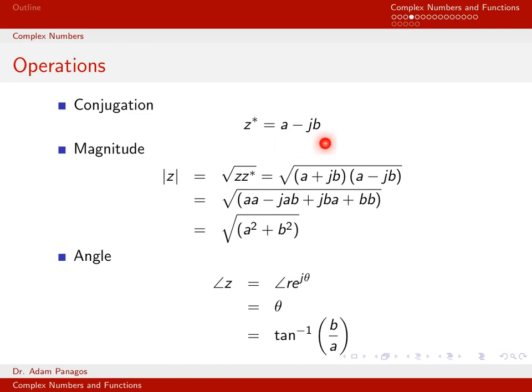Originally, we had z equals a plus jb. When I take the conjugate of z, I find j — there was only one of them — and I replace j with negative j. So it turns from a plus jb to a minus jb. If you have a more complicated number with many terms, you would do the same thing: replace every single j with a negative j.